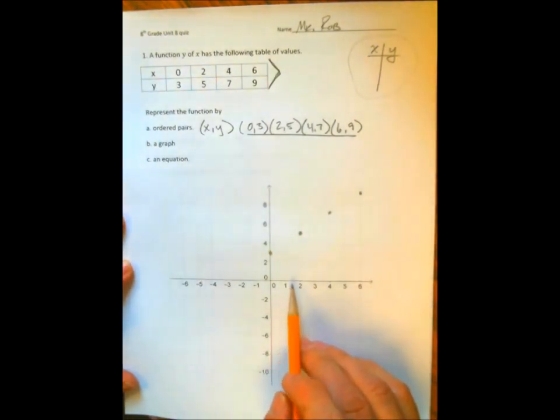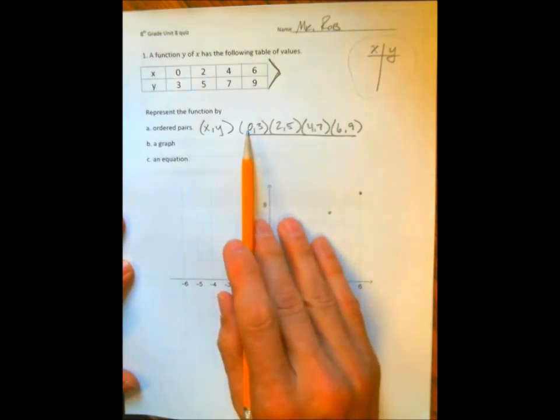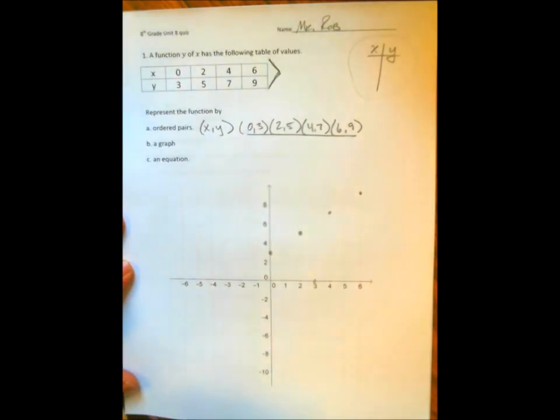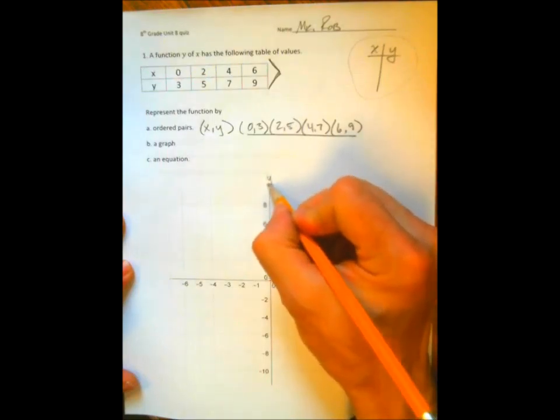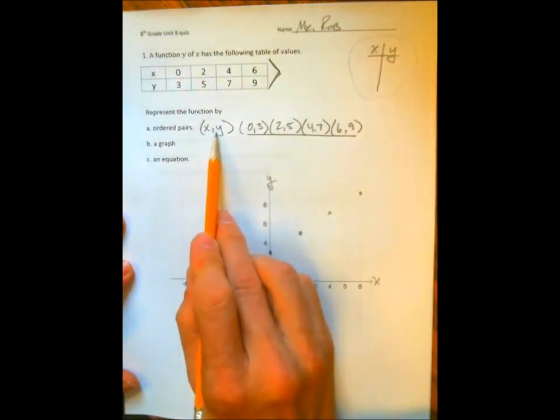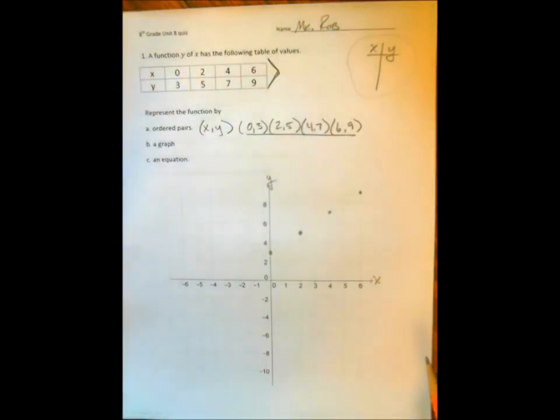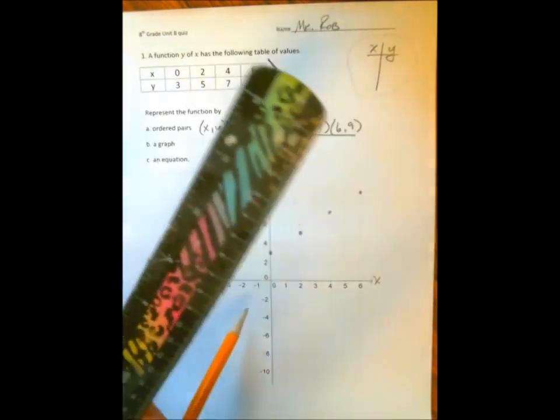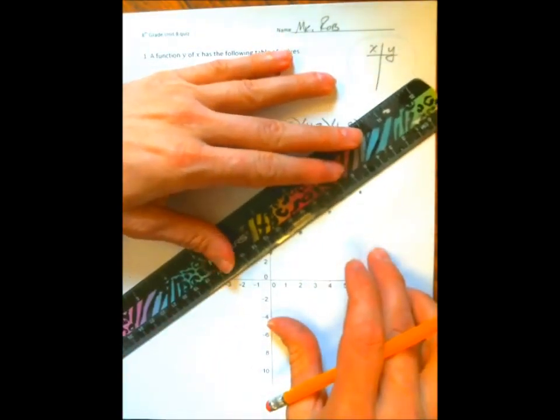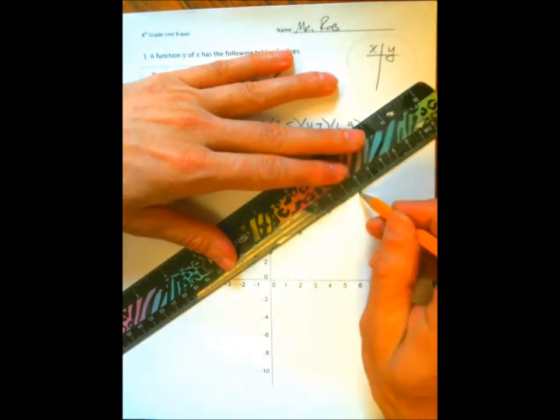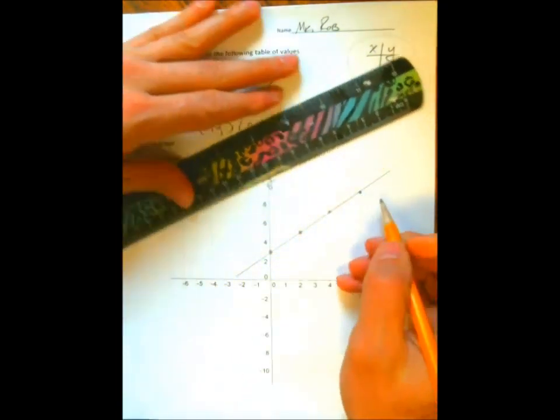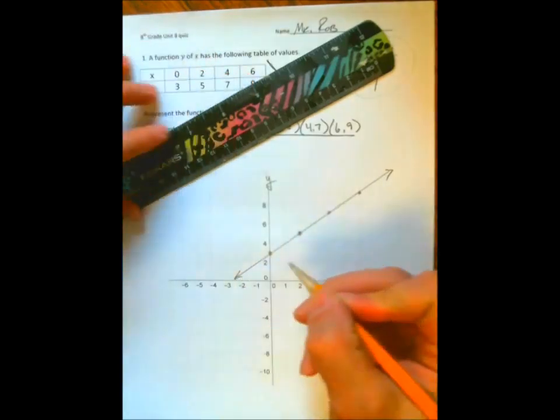Now some of you on your (0,3) went 0, 3 and put your (0,3) right there and couldn't figure out what was wrong. Remember, the x is first, the y is second, just like you write it in the ordered pair. And then all we need to do is find some kind of a straight edge and draw your line.